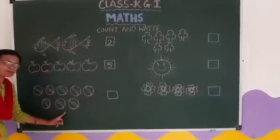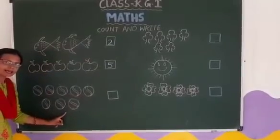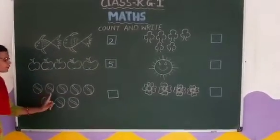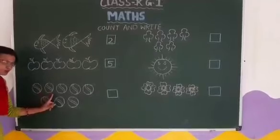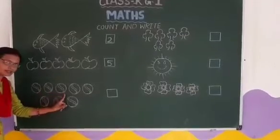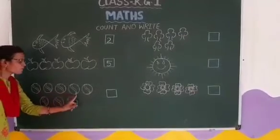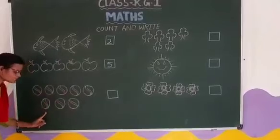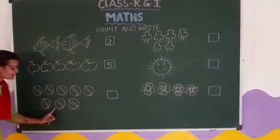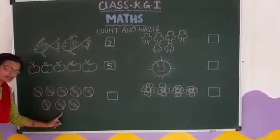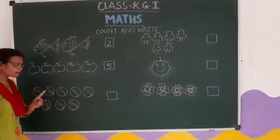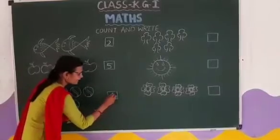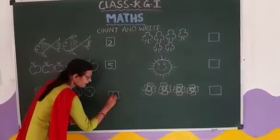How many balls are here? Count with me. 1, 2, 3, 4, 5, 6, 7, 8. 8 balls. So we will write 8 here.